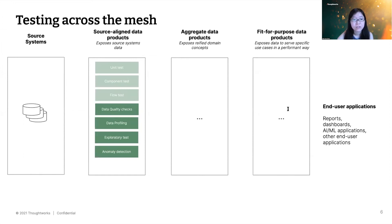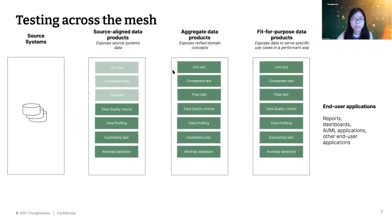Exploratory tests are still useful for source-aligned products, and when you find issues there, try to automate as much as possible. For aggregate data products and fit-for-purpose data products, all the techniques we discussed are still applicable — prioritized to your needs.